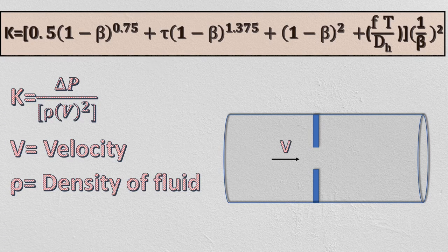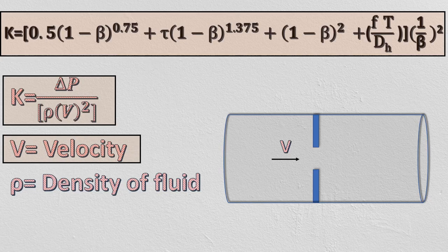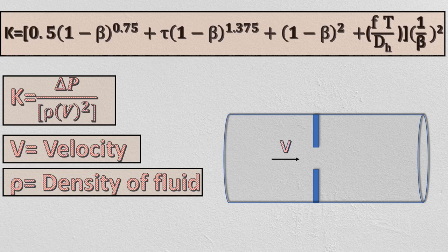The pressure drop across orifice can be calculated by using this equation by putting the value of K. Here V is the fluid velocity just before the orifice plate and ρ is the density of fluid.